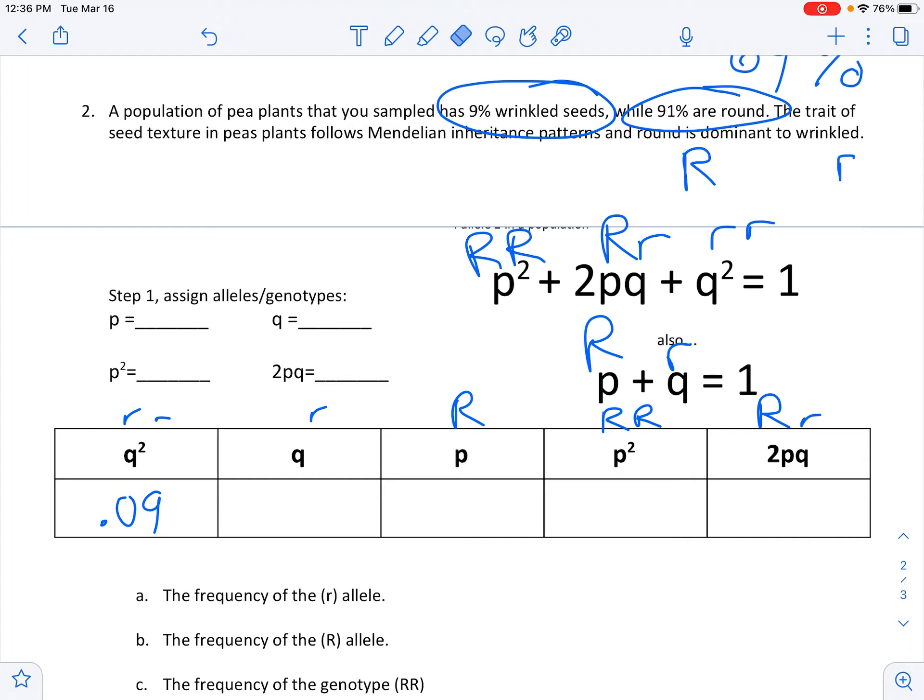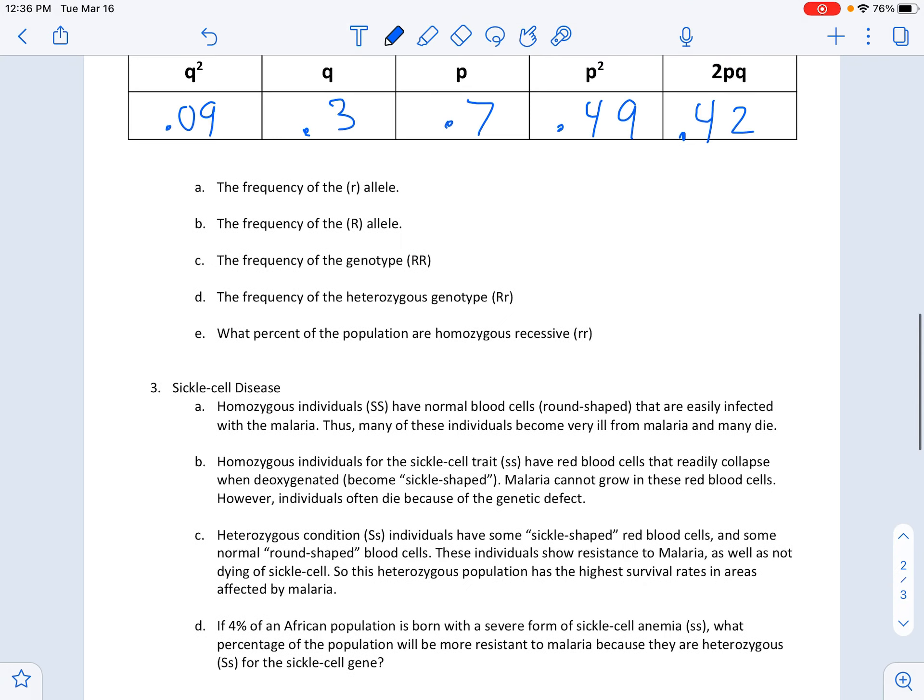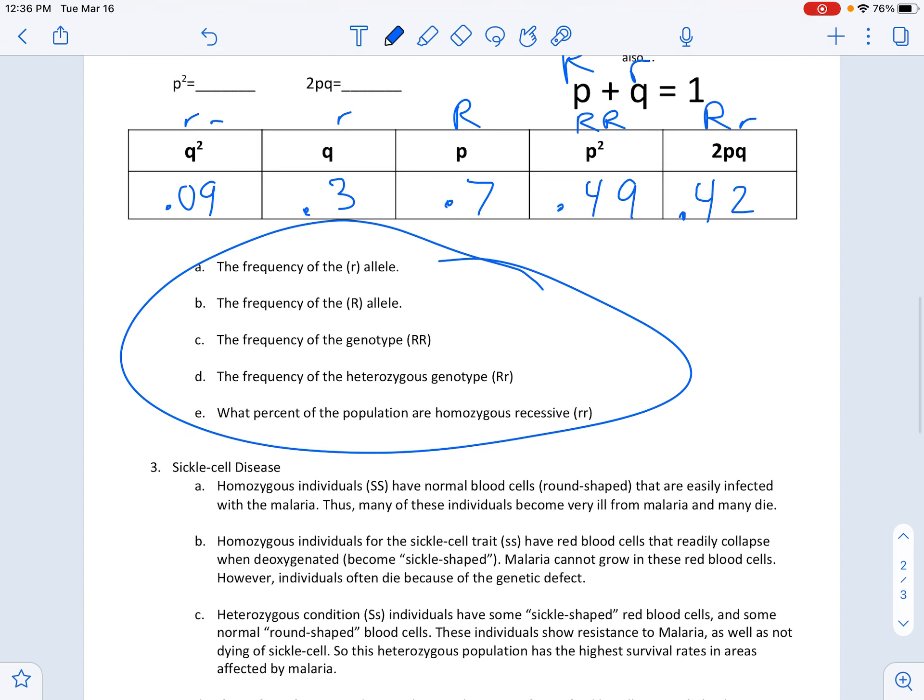So square root of 0.09 is 0.3, and then this must be 0.7. 0.7 times 0.7 is 0.49. 0.49 plus 0.09 is 0.58, so this must be 0.42. And then obviously you can just fill these out based on each of the columns - it's already given to you.